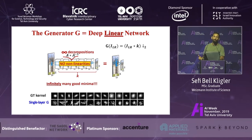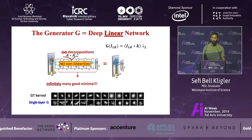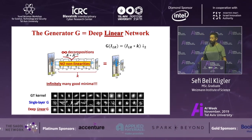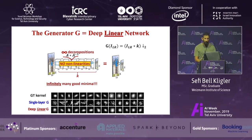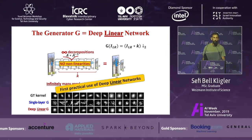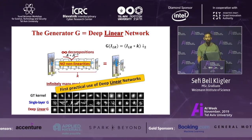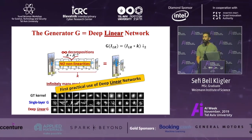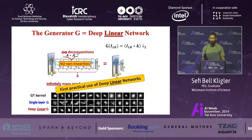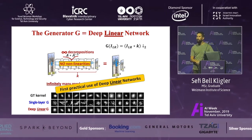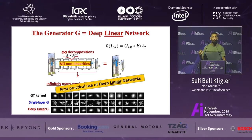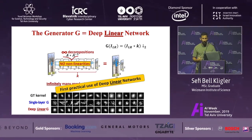We plugged this deep linear network into the generator, and the results were much more accurate and much more resembled the ground truth kernel. To the best of our knowledge, this is the first practical use of deep linear networks — an active field of research. We take these estimated kernels and plug them into the family of methods that assume someone provided the kernel.